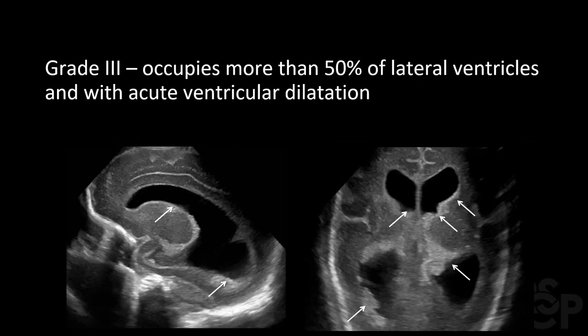Grade 3 will occupy more than 50% of the lateral ventricles with acute ventricular dilatation. This can be seen in the image on the left, where the lateral ventricle is quite enlarged, and in the coronal view on the right. In this case, the hemorrhage is on both sides, making it bilateral and symmetric.